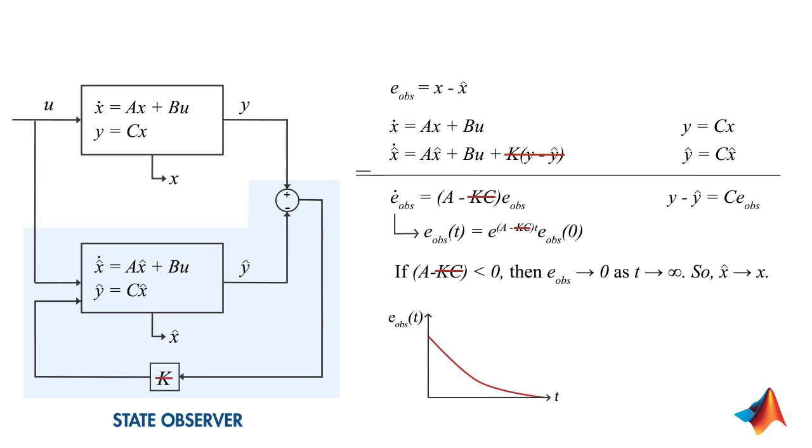The significance of having a feedback loop around the observer is that we can control the decay rate of the error function by selecting the controller gain K accordingly. However, here the decay rate solely depends on the matrix A. And if there are some uncertainties in the mathematical model, this means you don't know A exactly. Therefore, you can't control how quickly the error will vanish.